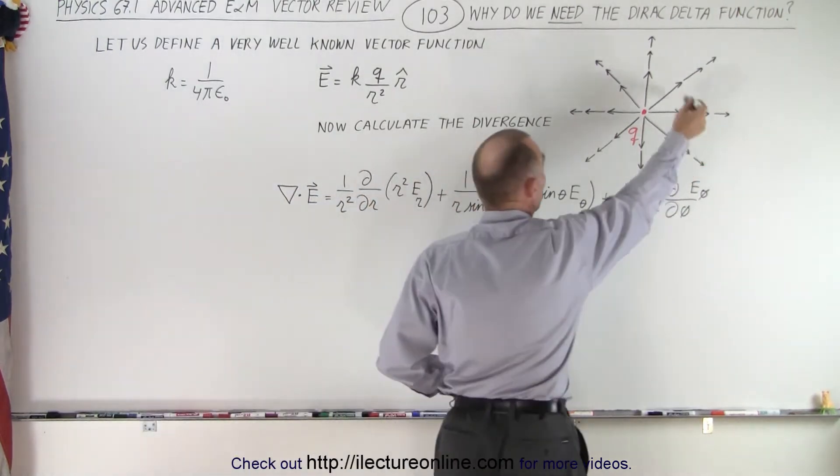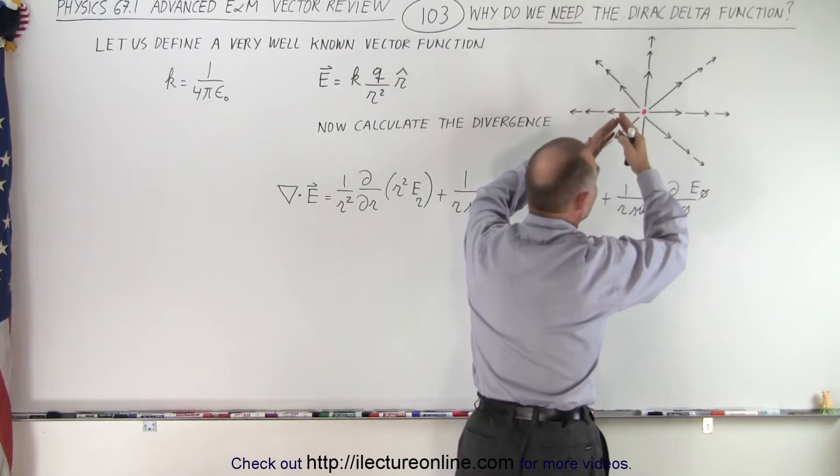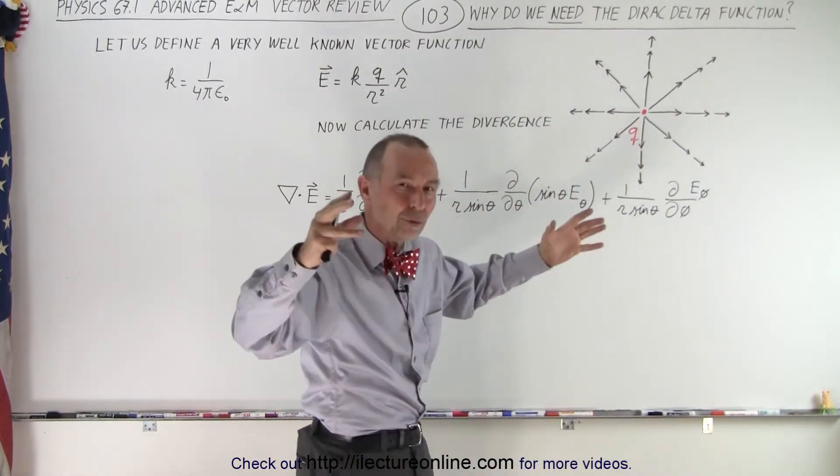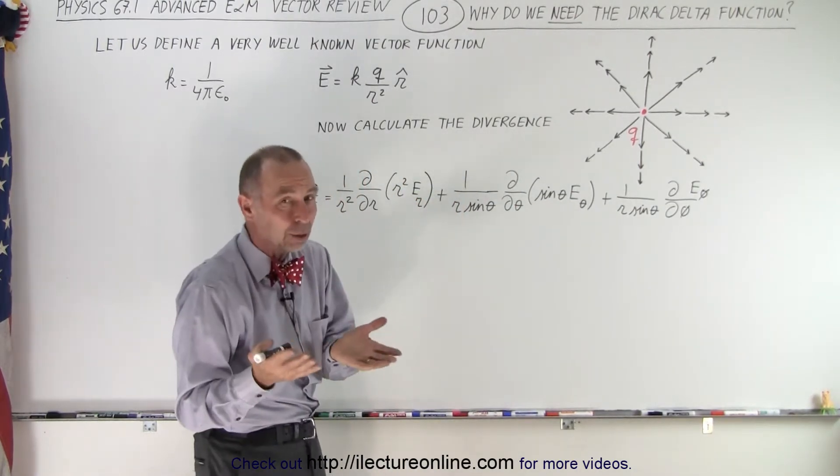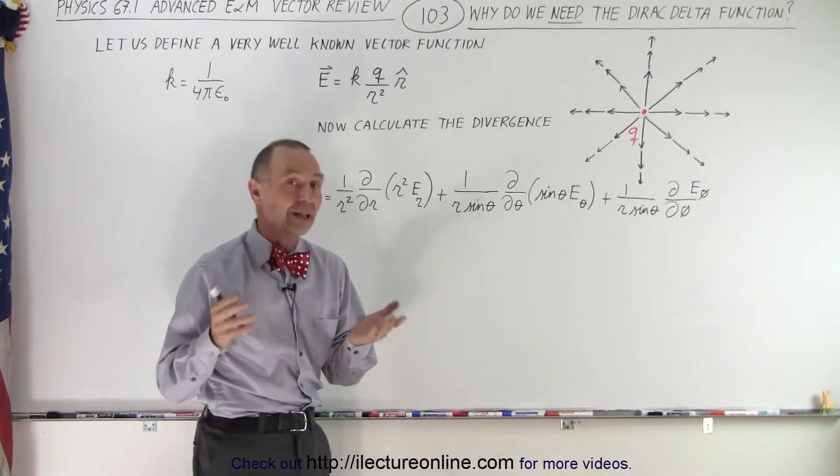You clearly see that if you draw a sphere around the point charge, there is an emanation of that electric field from inside that sphere outward, through the surface, through the walls of the sphere, so definitely we should get a value for the divergence when we take the divergence of that function.